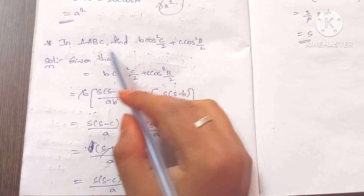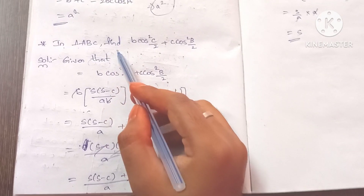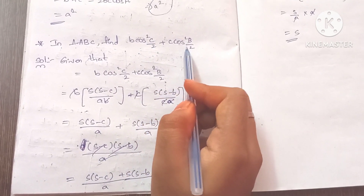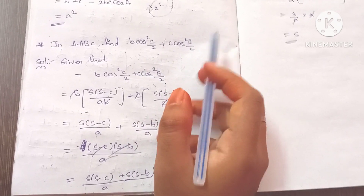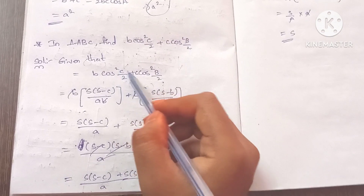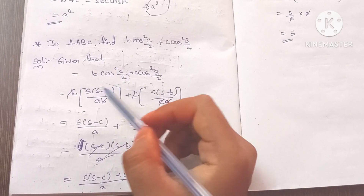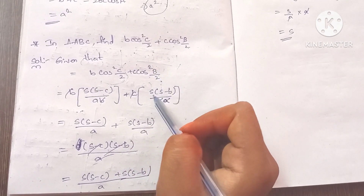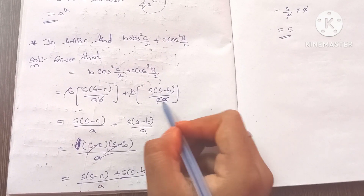Next problem: In triangle ABC, find b·cos²(C/2) + c·cos²(B/2). We substitute the formula for cos²(C/2), which is s(s-c)/ab, and cos²(B/2) is s(s-b)/ca.